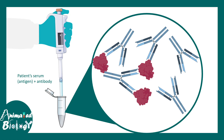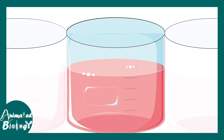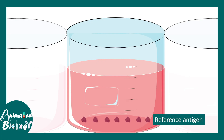Depending upon how much antigen is present in the patient sample, there would be selective binding. So you can see there are antibody-bound fractions and antibodies which are free. The next step in the ELISA is to coat the wells with a reference antigen — this is the same antigen that we want to detect from the patient sample.